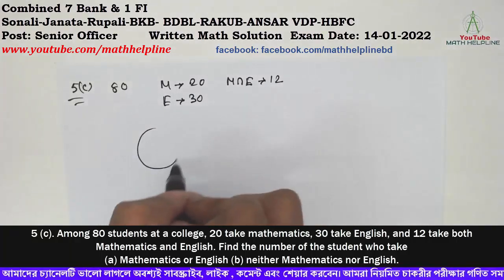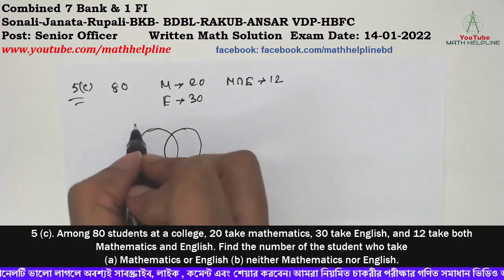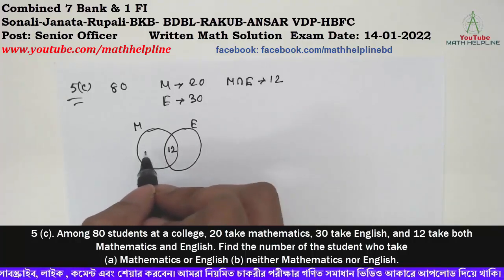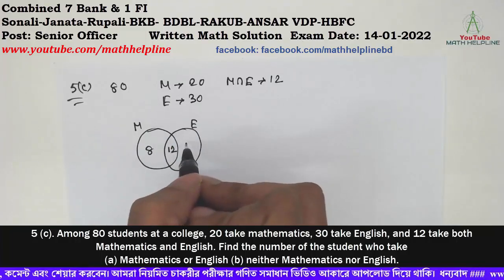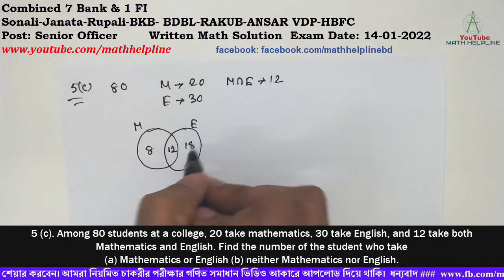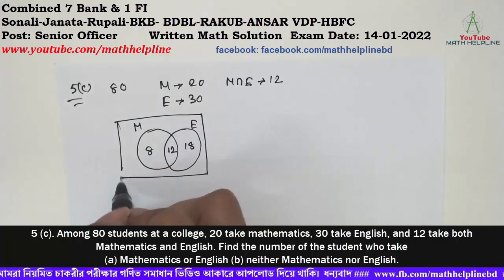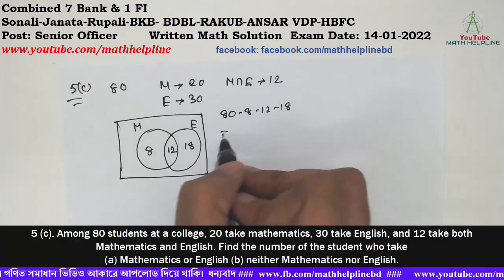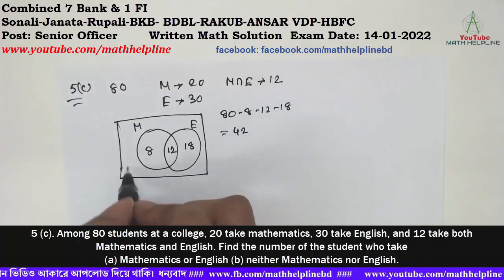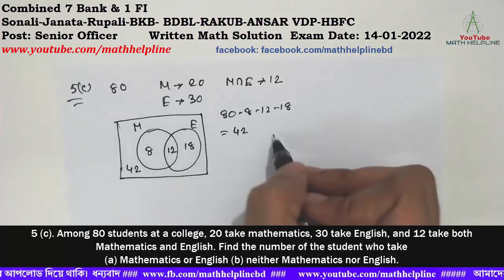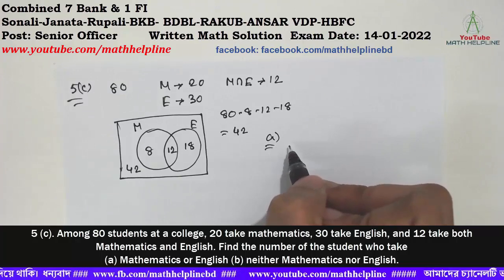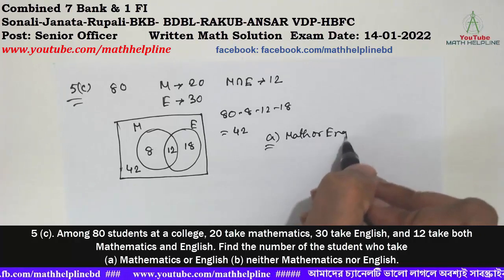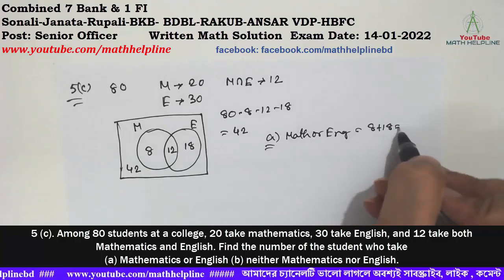The total number of students is 80. Mathematics is 20, English is 30, and both mathematics and English is 12. Math only is 20 minus 12 equals 8. English only is 30 minus 12 equals 18. So mathematics or English equals 8 plus 18 plus 12 equals 38. Neither mathematics nor English equals 80 minus 38 equals 26.